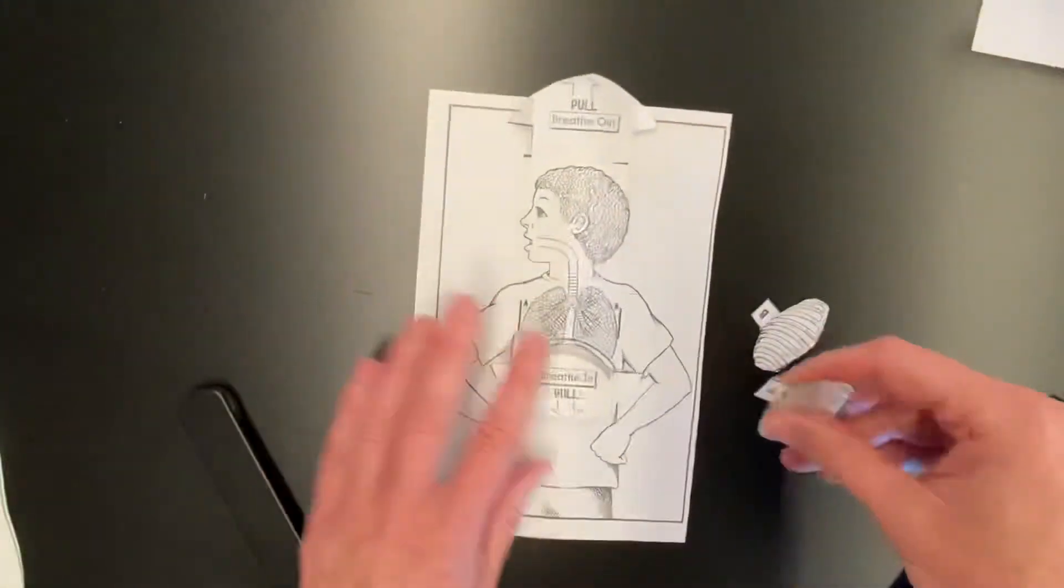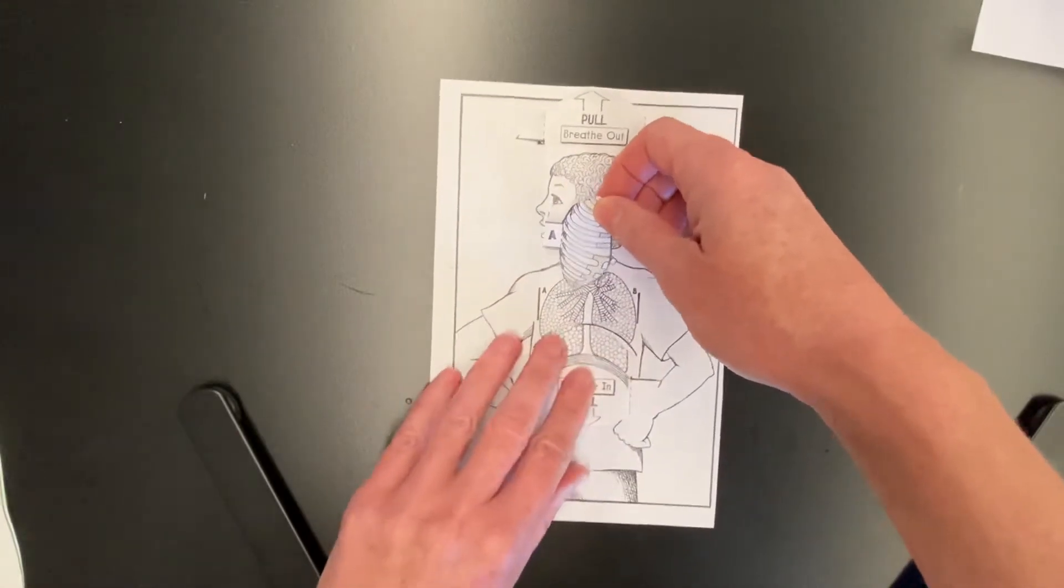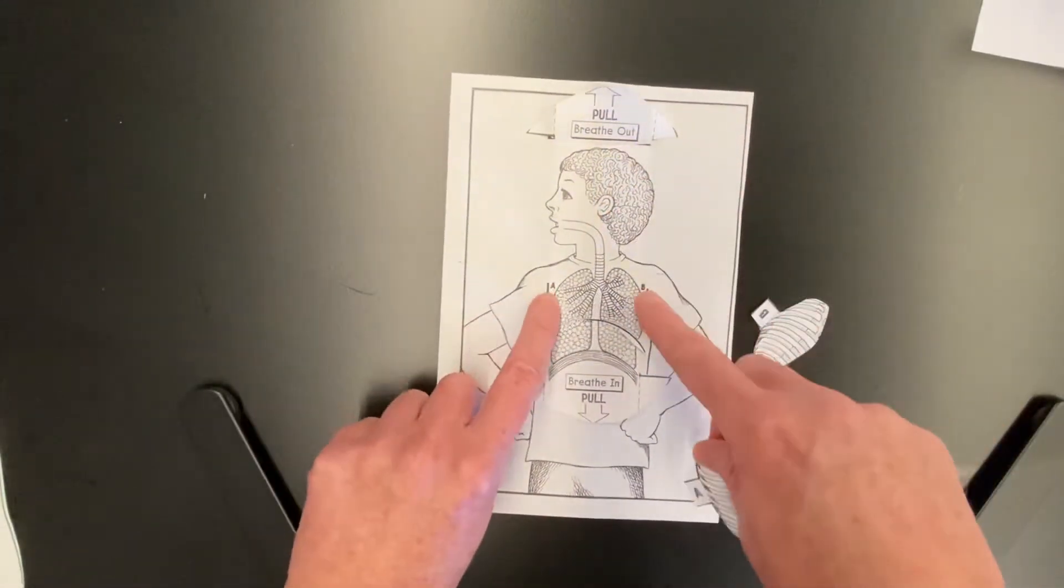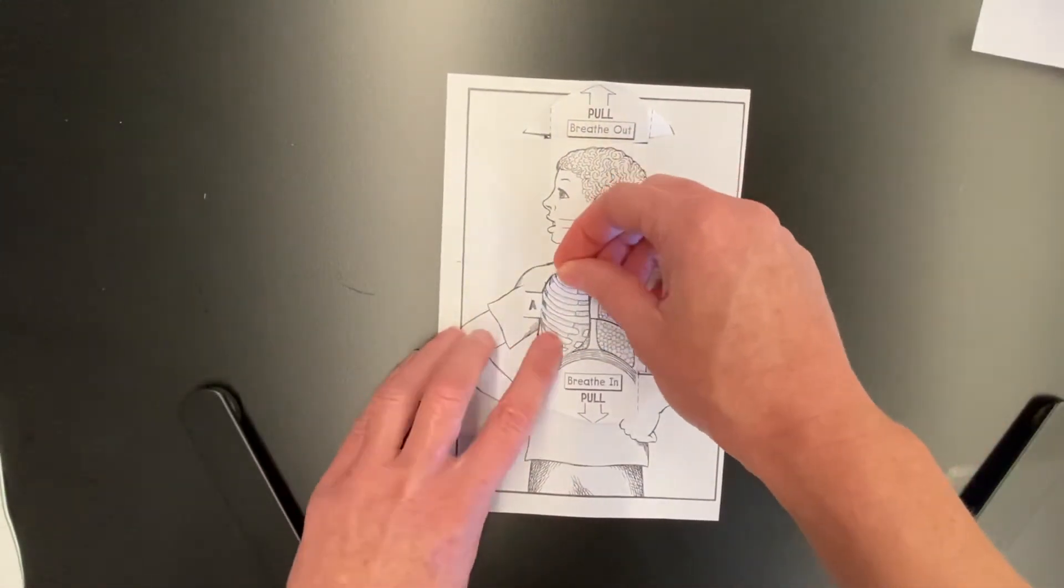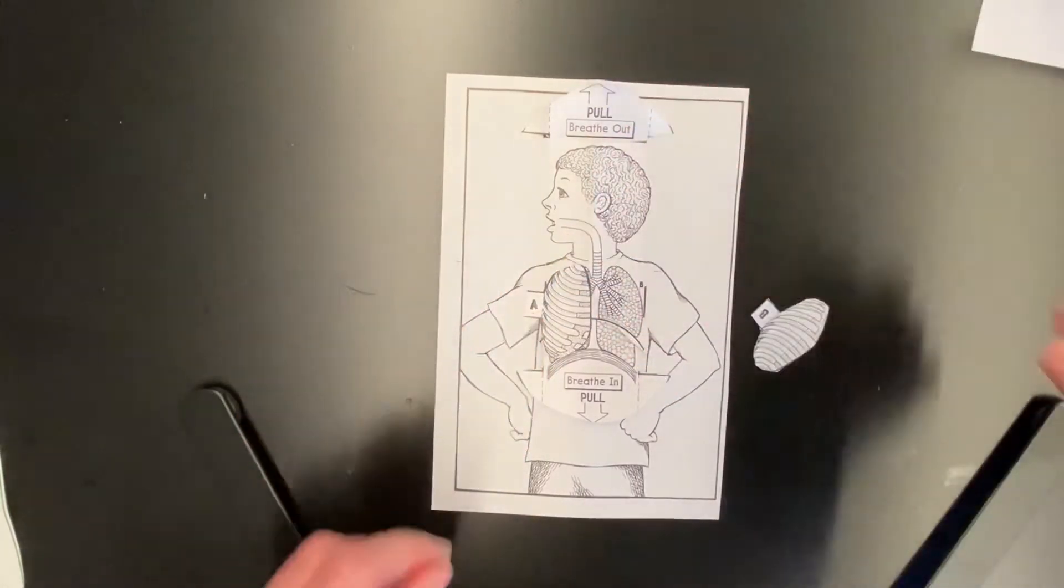Then I'm going to add the ribcages to protect my lungs. You can see A and B. All I do is put my A there.